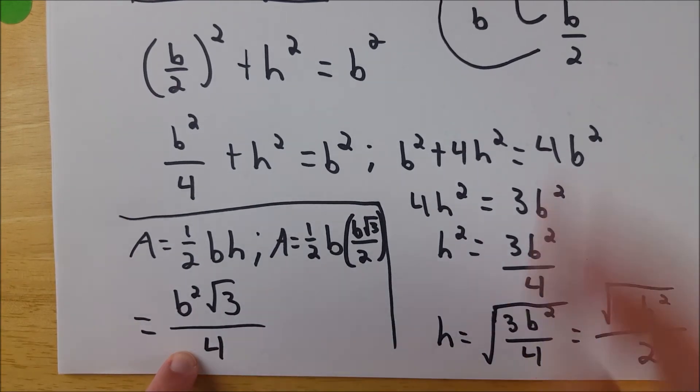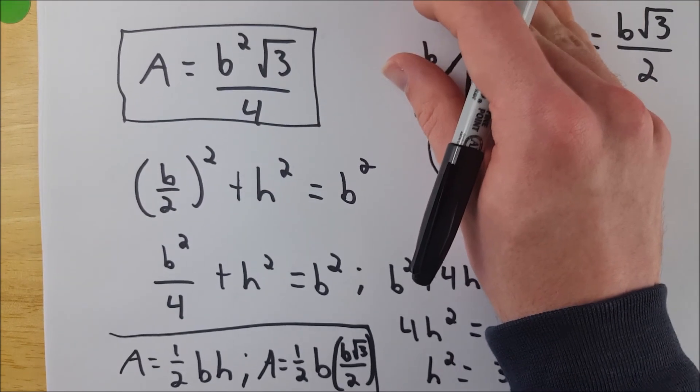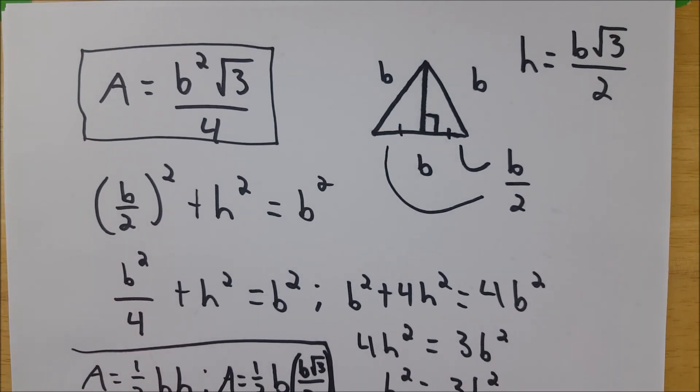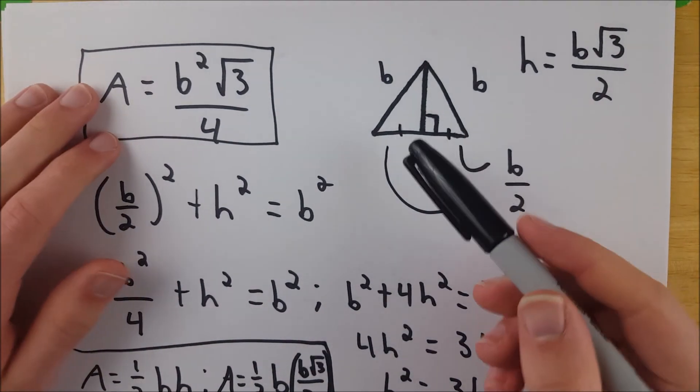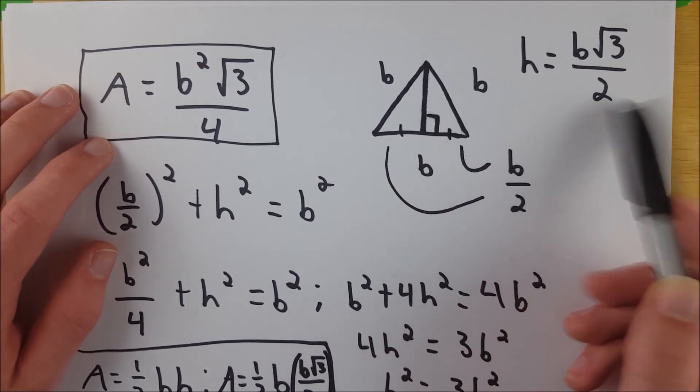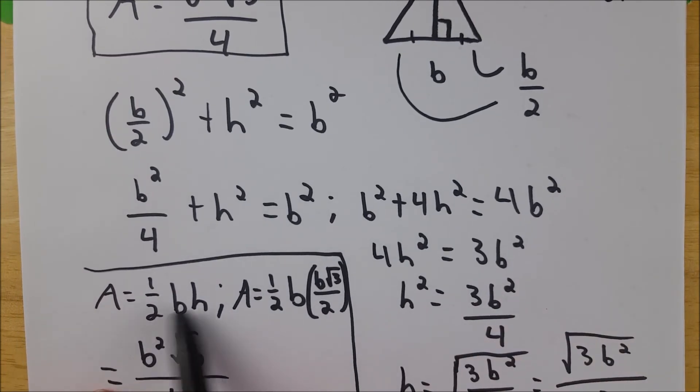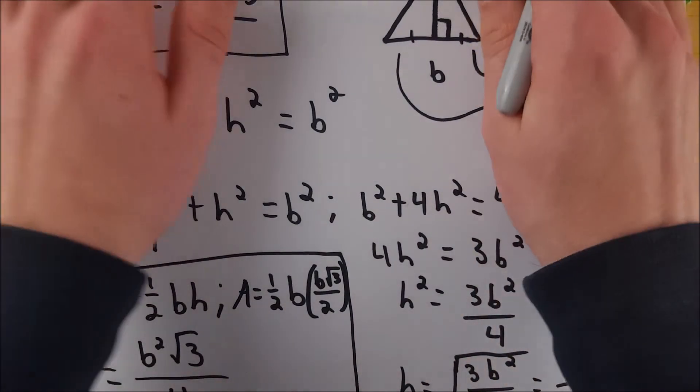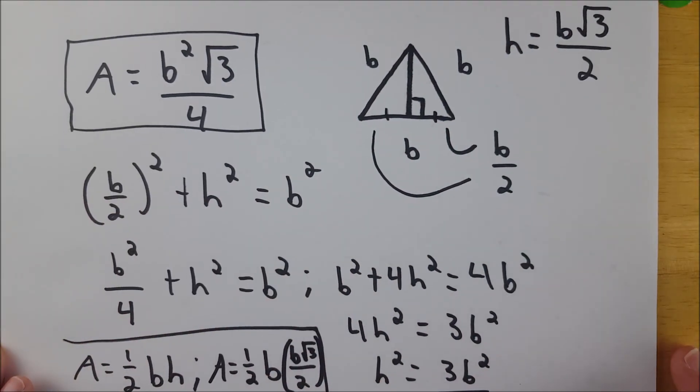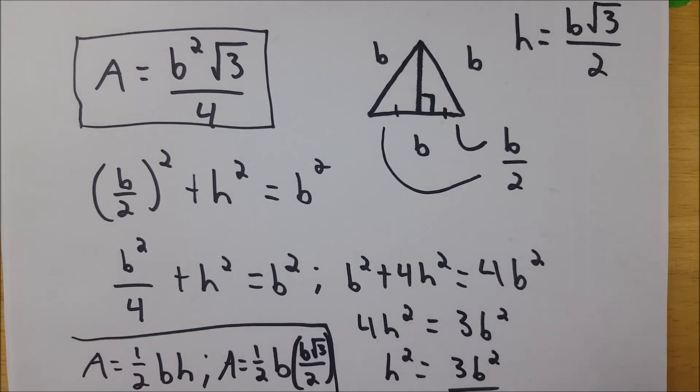And hey, look at that b squared root 3 over 4. That's what our area is equal to. And that's what we had up there to begin with. So all we did was we showed, we demonstrated that we can write the height of an equilateral triangle in terms of its base. And then from there, we can just substitute that into the generic triangle area formula. And then we get a more specific one that can be used for equilateral triangles. And all it requires is knowing the length of one of the sides, which would just be the length of any base.